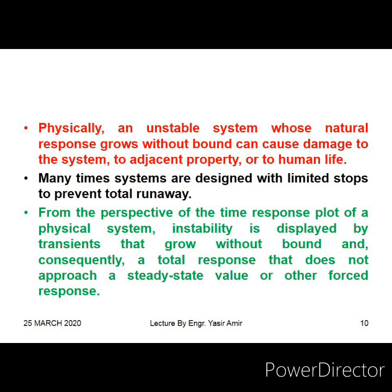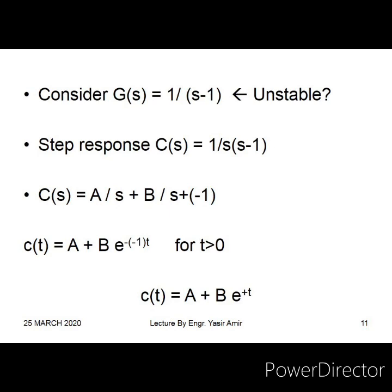From the perspective of the time-response plot of a physical system, instability is displayed by a transient that grows without bound, and consequently a total response that does not approach a steady-state value or forced response. Now consider an example: we have an unstable system, and if we make its pole-zero plot, the pole of the system is at s = +1 — the pole is on the right-hand side of the j-omega axis.